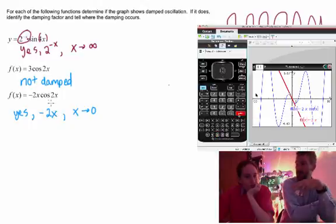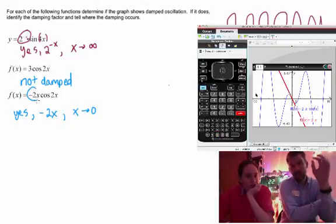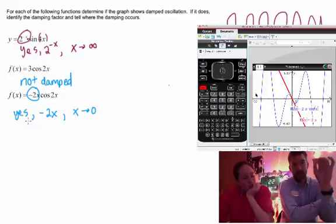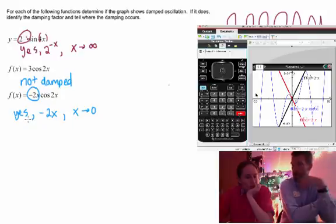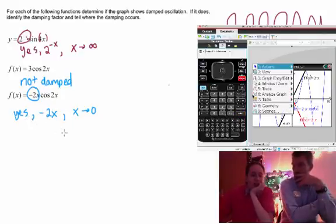Now the fun thing with all of these graphs—if there's a damping factor, if you graph what that damping factor is, a positive and a negative version of that, it actually forms the border for this graph.